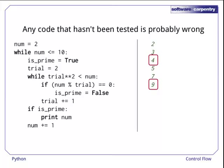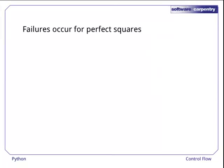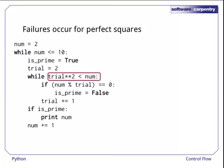Whoops! 4 and 9 aren't prime. Where's the bug? One clue is that 4 and 9 are both perfect squares. So let's have a look at the one thing we changed, the condition of the inner loop.